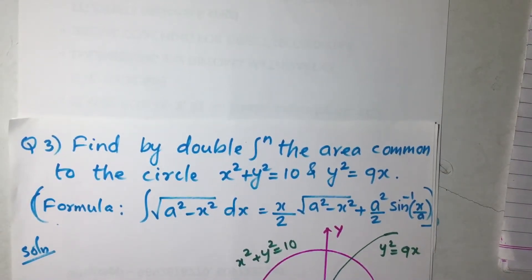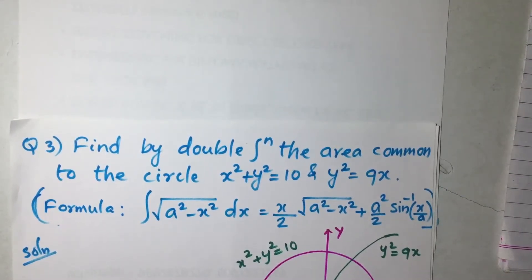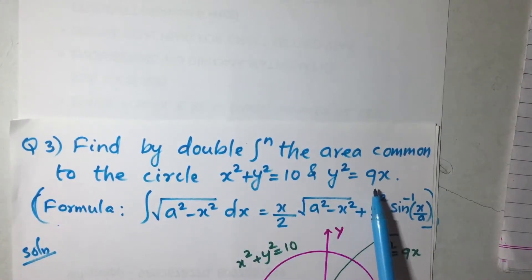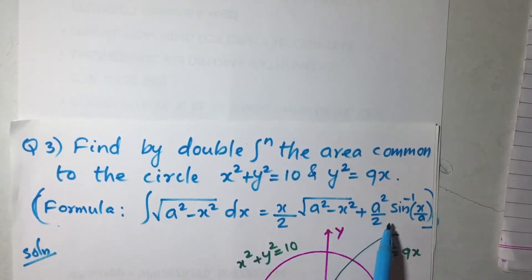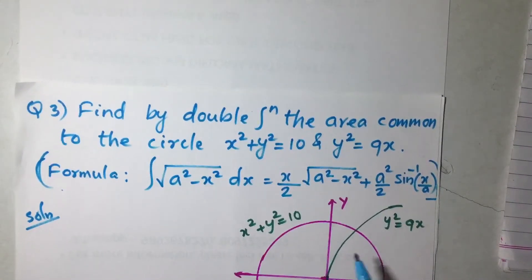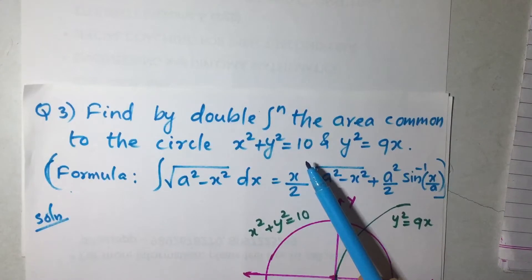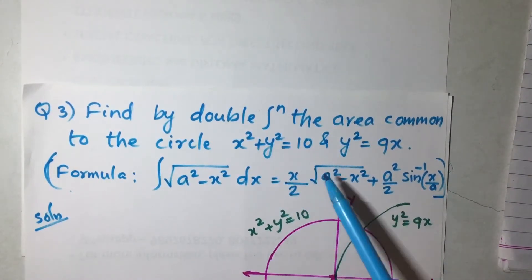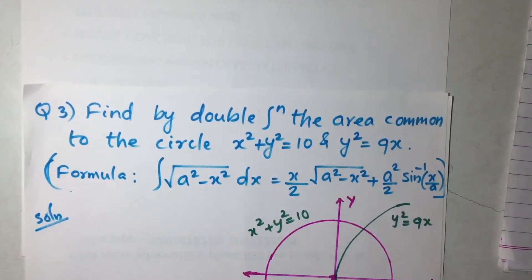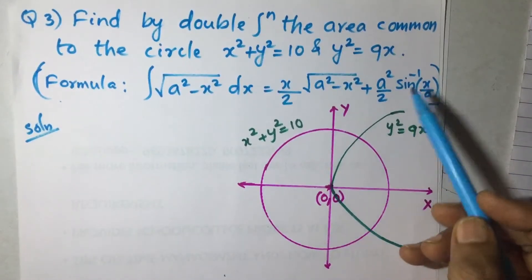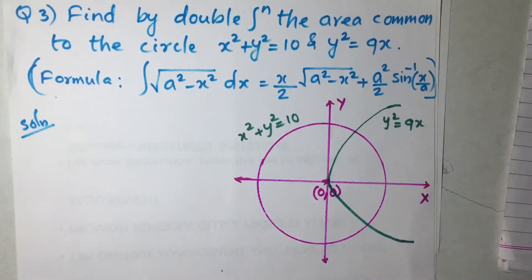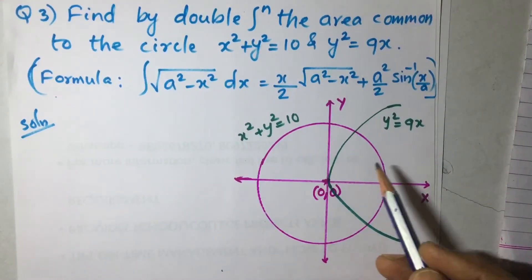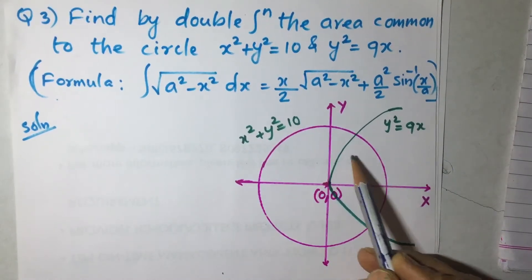We will solve this important question: find by double integration the area common to the circle x² + y² = 10 and the parabola y² = 9x. Here x² + y² = 10 is a circle with center (0,0) and radius √10. I have drawn the circle here, and y² = 9x is a parabola symmetrical to the x-axis. We need to find the area common to the circle and the parabola — that is our region of integration.